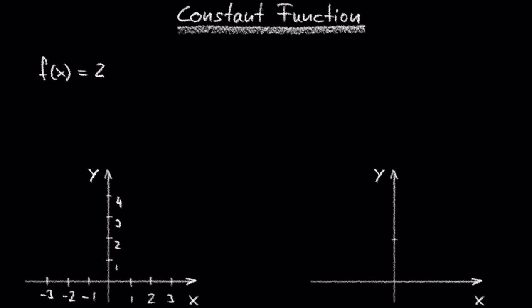the output value is always 2. The graph of this function is a horizontal line which intersects with the y-axis at 2.